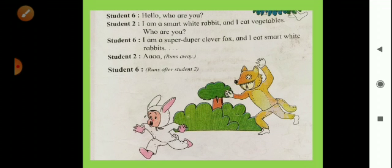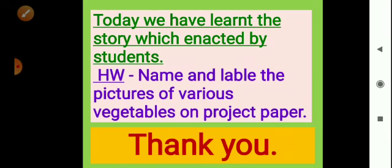Student 6, the fox, ran after Student 2. Till the last part of the story we saw the rabbit eating vegetables, but here the super duper clever fox eats the rabbit. The rabbit, who was frightening all the vegetables, was now frightened by the fox. It's a small act story. Today we have learnt the story enacted by students.